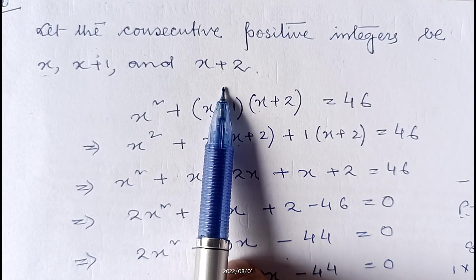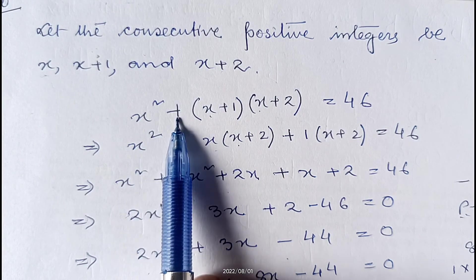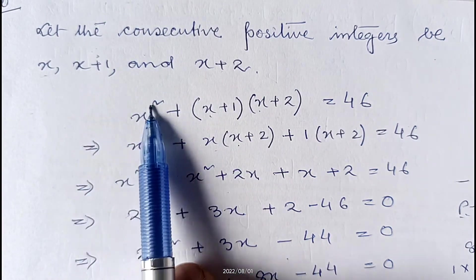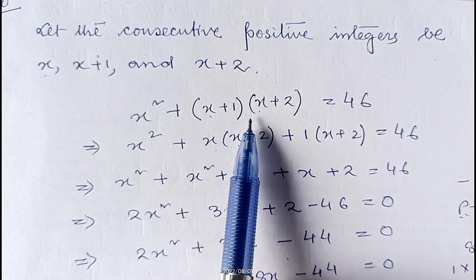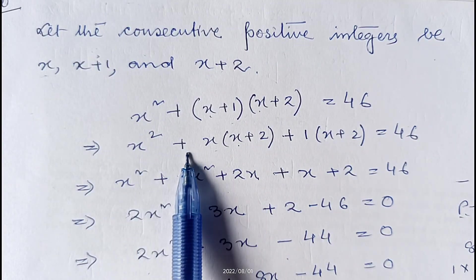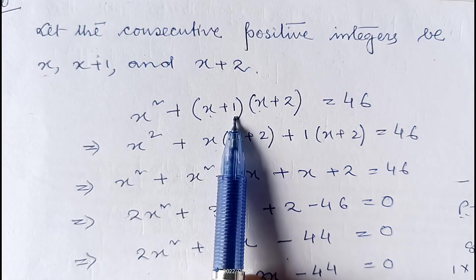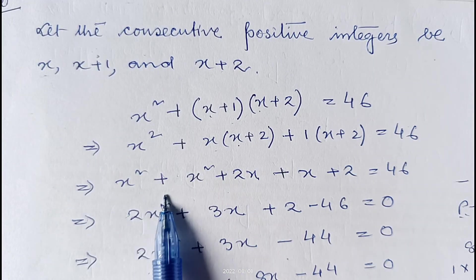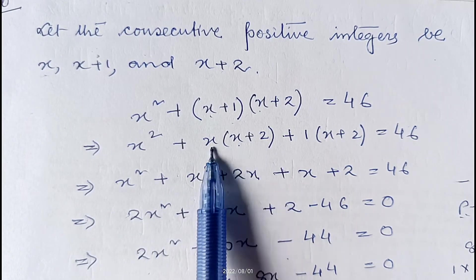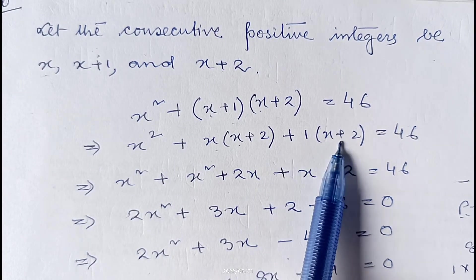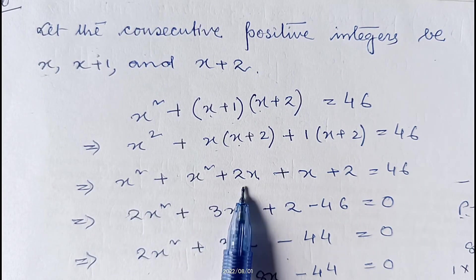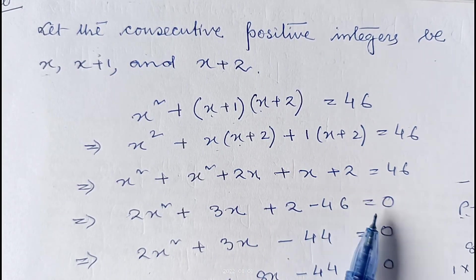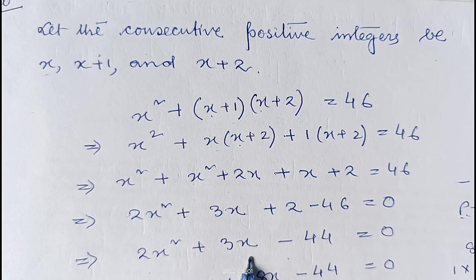As per the question, the sum of the square of the first and the product of the other two equals 46. So x² + (x+1)(x+2) = 46. Expanding (x+1)(x+2): x(x+2) + 1(x+2) = x² + 2x + x + 2 = x² + 3x + 2. So x² + x² + 3x + 2 = 46, giving 2x² + 3x + 2 − 46 = 0, which is 2x² + 3x − 44 = 0.